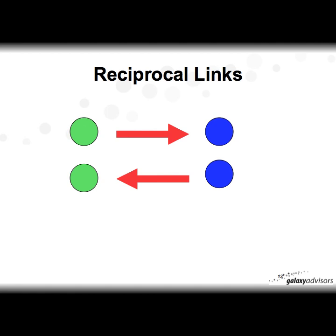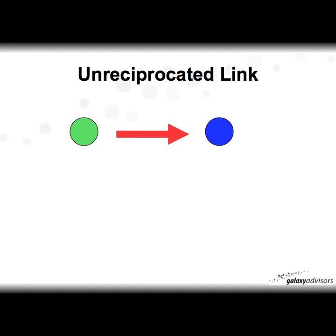There's something called reciprocated links. If I emailed someone — represented by the blue — that's from me to them. It's reciprocated if the blue person sends an email back to me. An unreciprocated link is when I send somebody an email and they never reply, or my web page links to another page but that page doesn't link back to mine, or a Wikipedia article links to another article that doesn't refer back. You'll see that in wiki search there is an option for collecting reciprocated links.